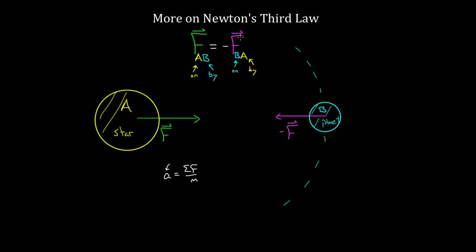Another misconception is that people think there might be a delay in the creation of this Newton's third law partner force. People think maybe if you exert the first force fast enough, you can catch the universe sleeping and there might be a delay in the creation of the other force. But that's not true. Newton's third law is universal. No matter what the situation — acceleration or no acceleration, motion or no motion, one object bigger or smaller — if they're Newton's third law partner forces, they are equal, they are opposite, and always equal and opposite at every given moment in time.